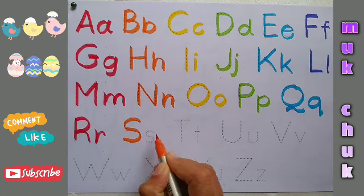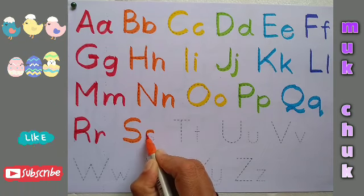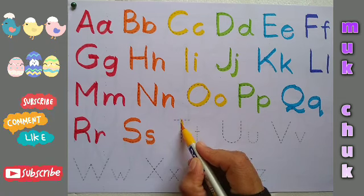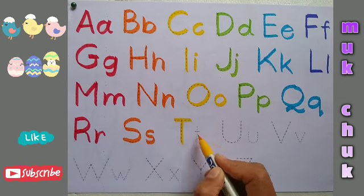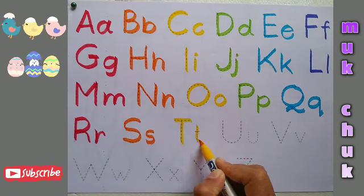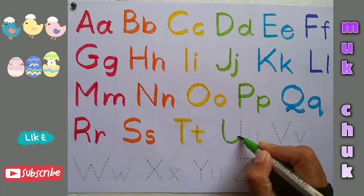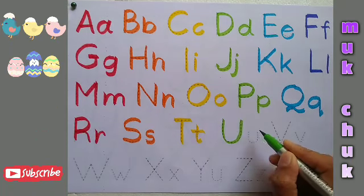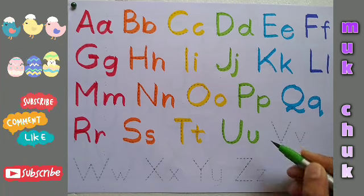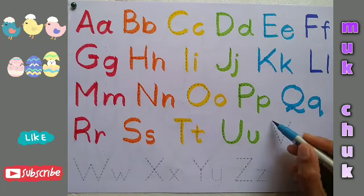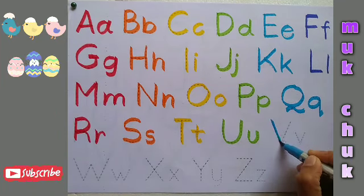S, capital S, small s. S for sun. T, capital T, small t. T for tiger. U, capital U, small u. U for umbrella.